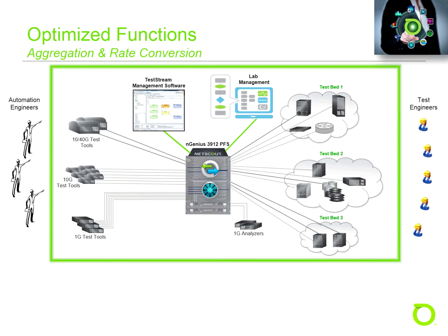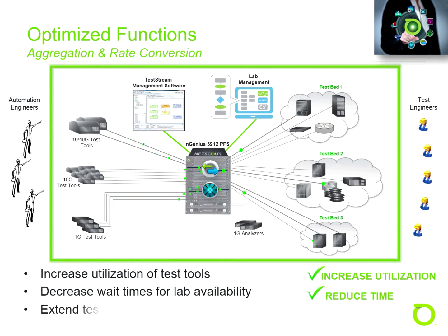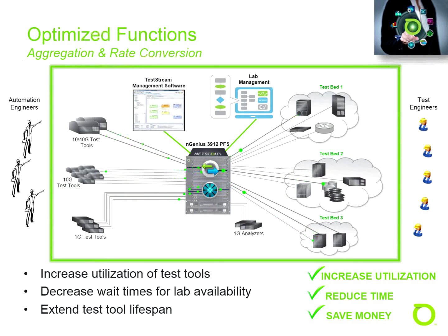Next, let's look at how aggregation and rate conversion can help optimize an automated lab. Using aggregation and rate conversion, lab managers can greatly increase utilization of test tools by using lower-speed tools for higher-speed tests. In this example, there aren't enough 40-gigabit test tool ports to meet current demand. Rather than wait, the lab manager can make use of unused 10-gigabit tool ports instead. In addition to increasing utilization and decreasing wait times, aggregation and rate conversion can greatly extend the useful lifespan of expensive test tools, postponing or eliminating the need for additional expenditures.